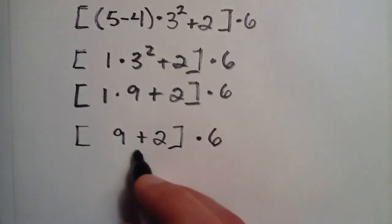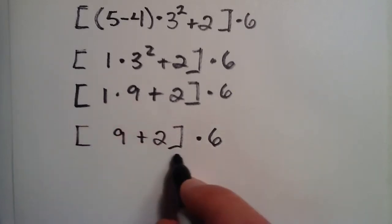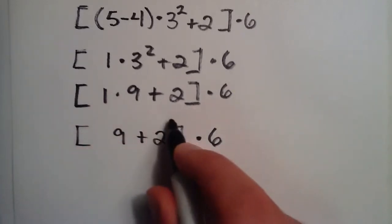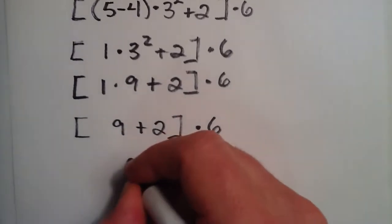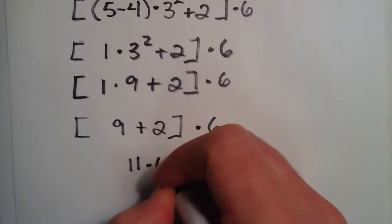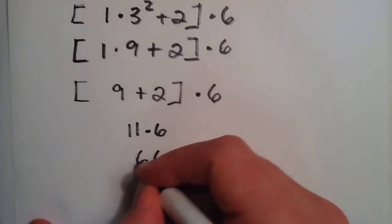And plus 2 times 6. So we have a multiplication here, and we have an addition, but we still need to do the addition first because it's inside the grouping, and the grouping is more important than the multiplication. So 9 plus 2 gives us 11. And then we just do 11 times 6, which gives us our answer of 66.